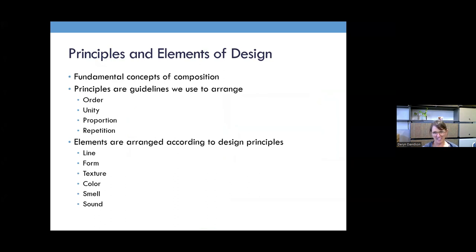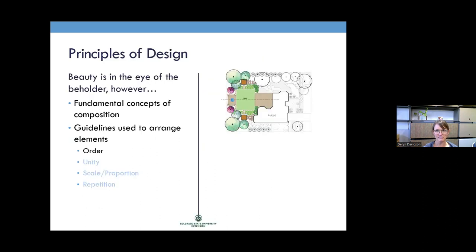These are the fundamental concepts of composition. You have them in photography, drawing, painting, and landscape design. Principles are guidelines we use to arrange elements: order, unity, proportion, and repetition. Elements are arranged according to those principles: line, form, texture, color, smell, and sound. These are concepts good to be aware of. You can always go back and review this material as you start your landscape design.